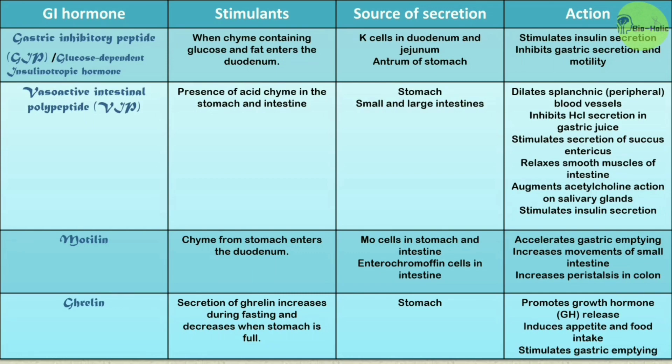The vasoactive intestinal polypeptide (VIP): presence of acid chyme in the stomach and intestine stimulates VIP secretion. The source of VIP is the stomach and small and large intestines. It dilates splanchnic blood vessels, inhibits HCl secretion with gastric juice, stimulates secretion of succus entericus, relaxes smooth muscles of intestine, augments acetylcholine action on salivary glands, and also stimulates insulin secretion.